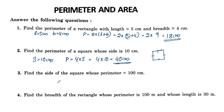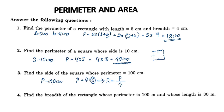Next, find the side of a square whose perimeter is 100cm. The perimeter of a square is 100cm. Since the perimeter equals 4s, we have 4s equals 100. Therefore s equals 100 divided by 4. If we multiply 25 by 4, we get 100, so the side is 25cm.